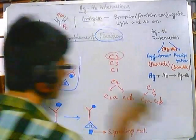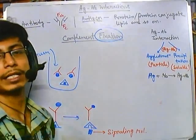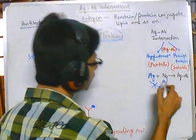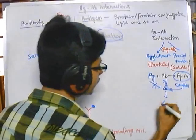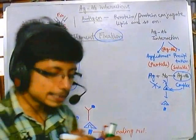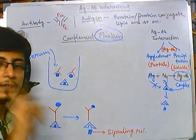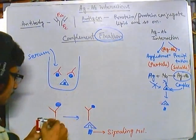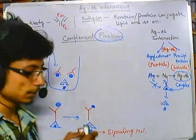This is the process of complement activation inside our body. In this assay we utilize the concept that only an antigen-antibody complex can fix complement. If we provide only antigen, it won't fix complement. If we provide only antibody, it's unable to fix complement. Only when antigen and antibody are present together as a complex can they fix the complement.